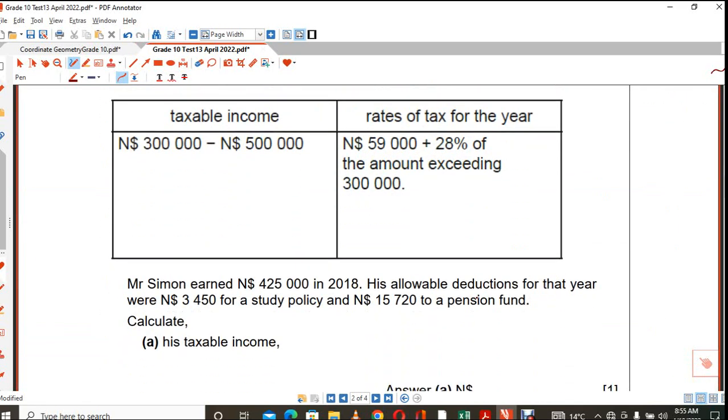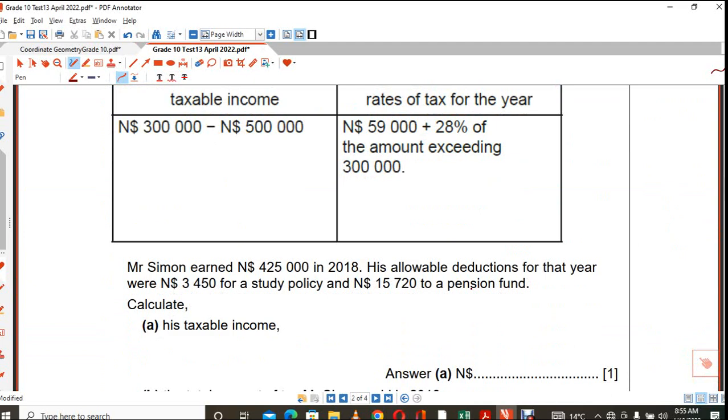Question three. I don't know. People don't understand these things first. You see this amount here. The 15,000. Are you following? 720. And the 3,450. This is a yearly fee that should not be taxed. So what you need to do here, you must say 425,000. You subtract 3,450 plus 15,720.